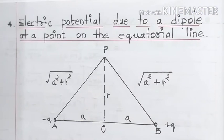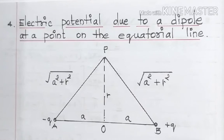Hello students, welcome once again to this channel. Today we are going to see the fourth derivation of Chapter 2, Electric Potential and Capacitance in CBSE Physics, Class 12. Come on, let us move on to the derivation.